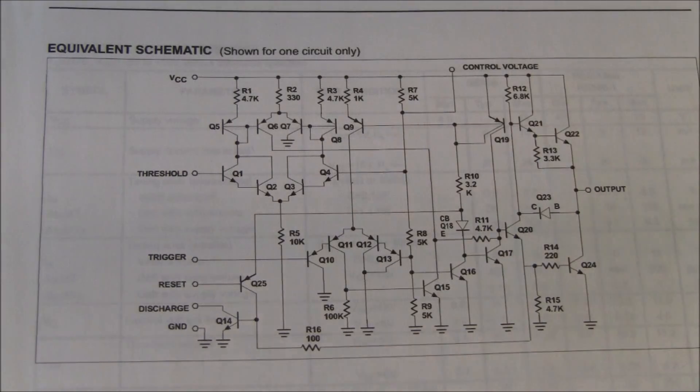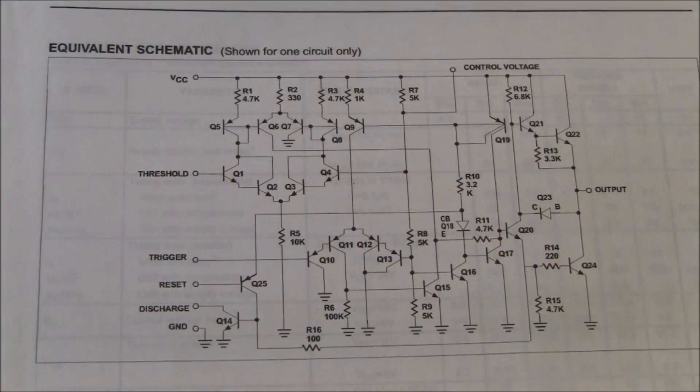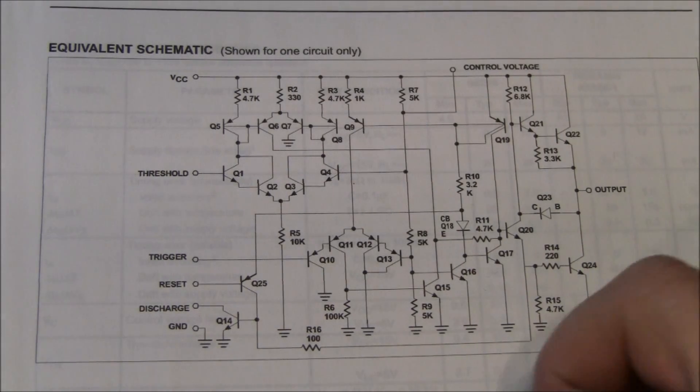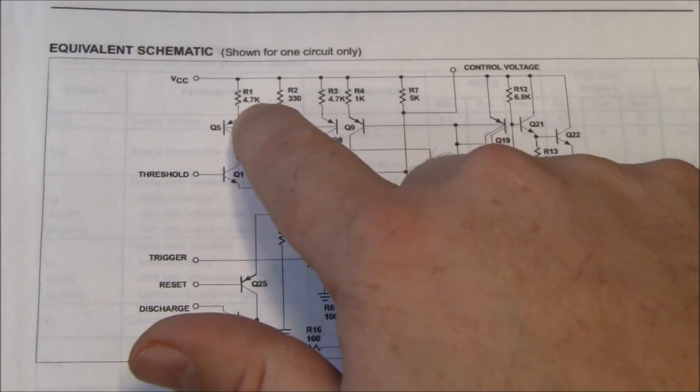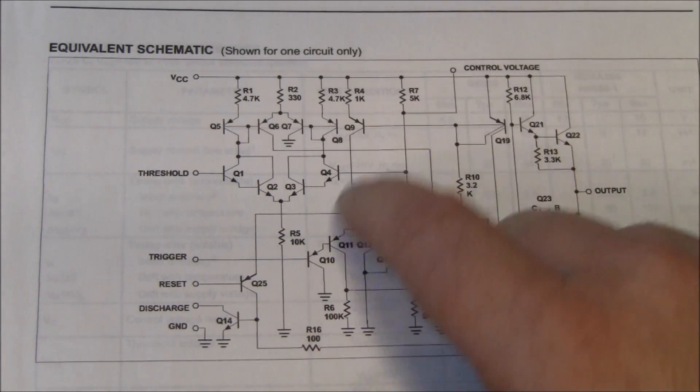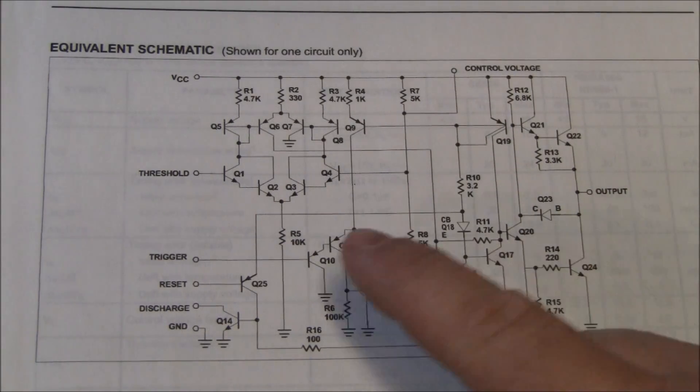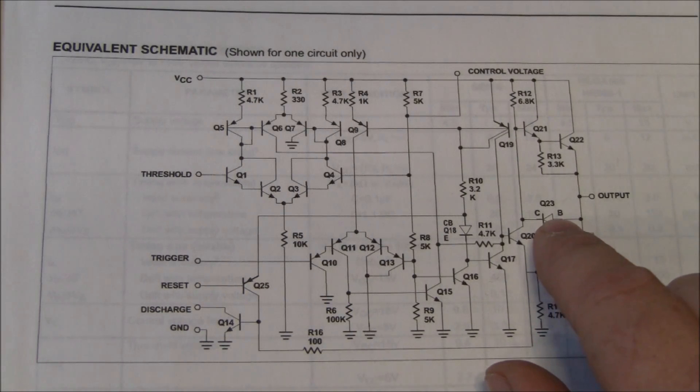The actual circuit in this little chip is shown right here for the 555. You bring the voltage into the chip, these squiggly lines are all resistors. There's at least 15 resistors, over 22 transistors, and a couple diodes.